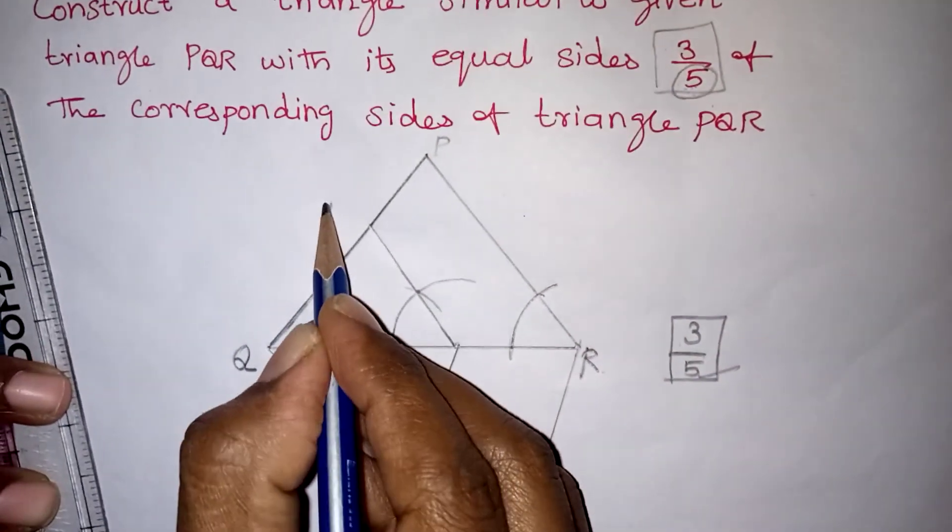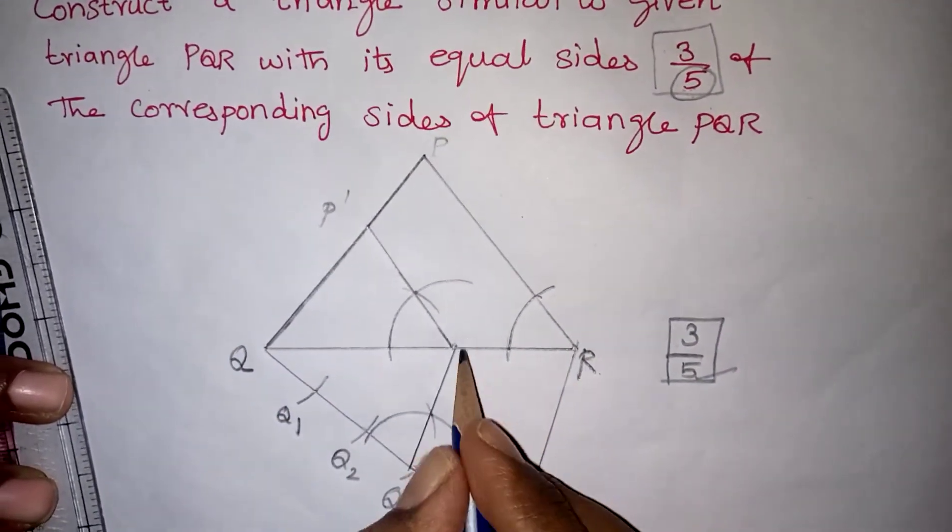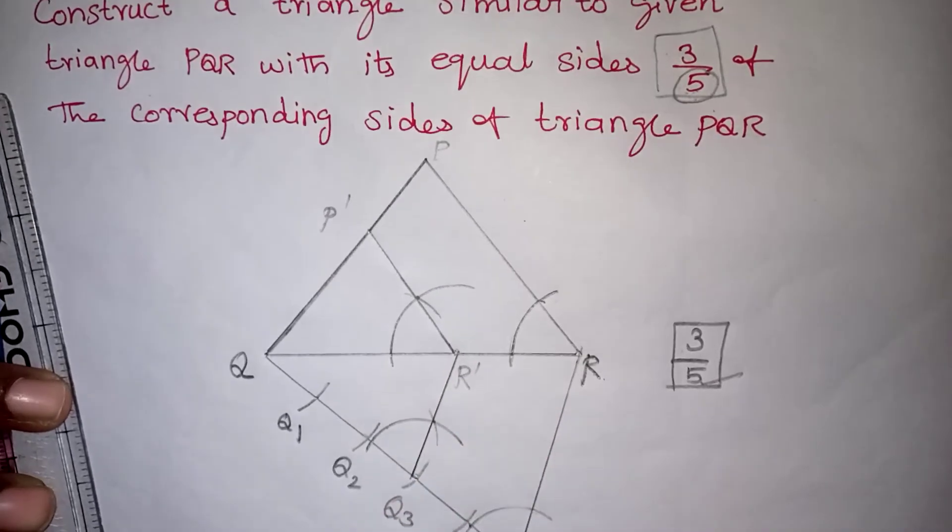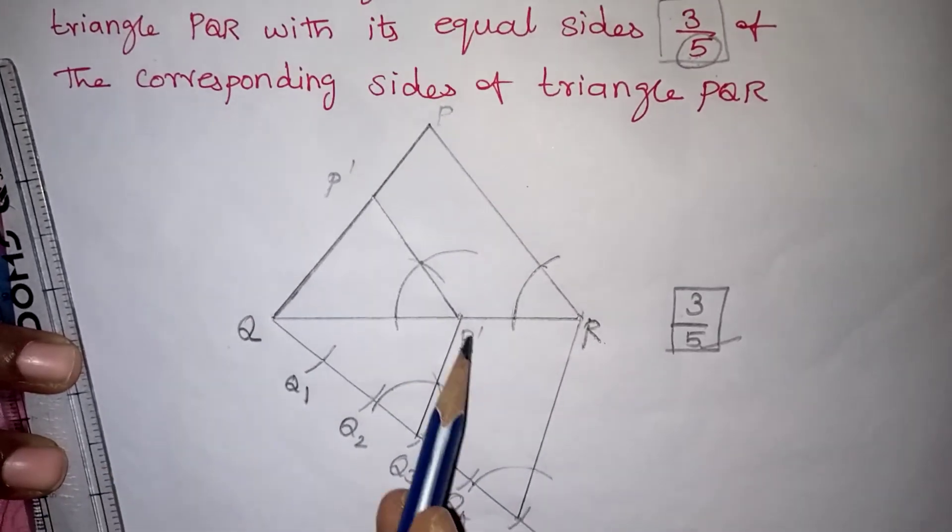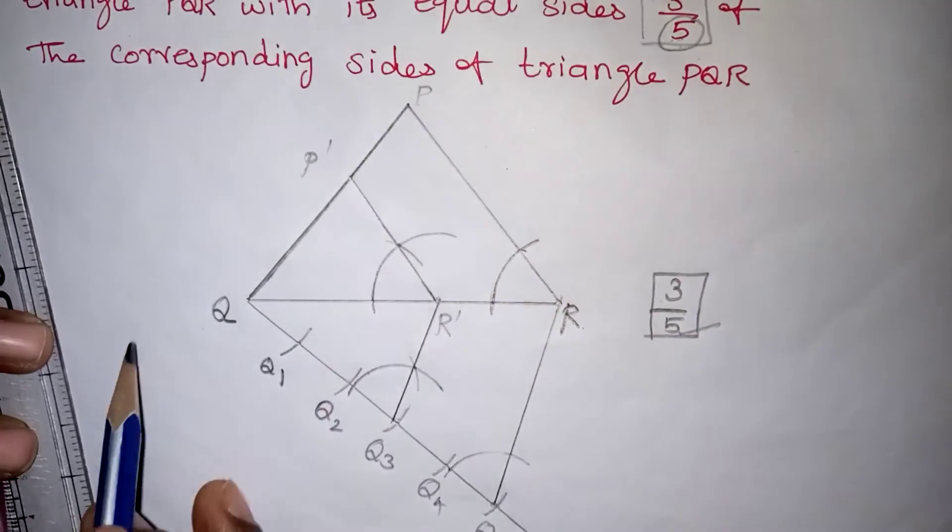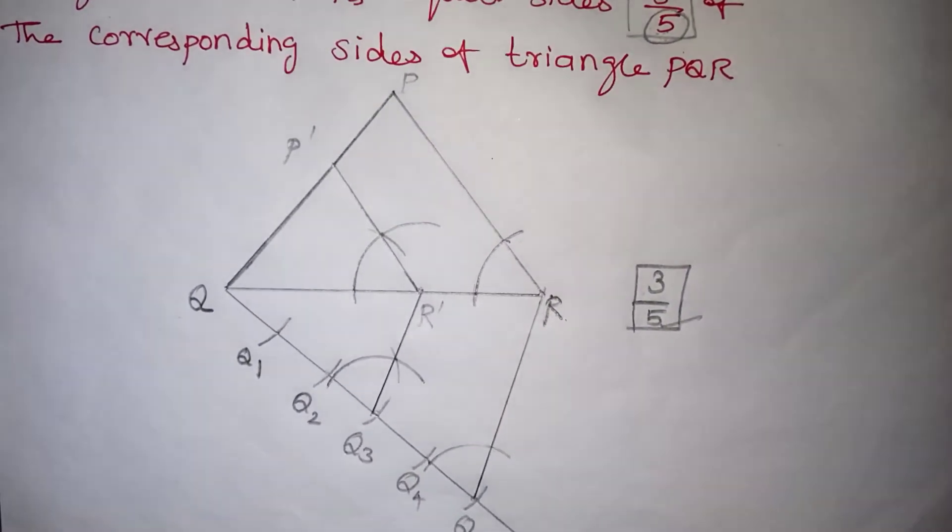Like this, you have to join. Here P is there. You just write it as P dash. Here R is given. You can write it as R dash. Now P dash Q R dash is a similar triangle to PQR. This is your final diagram.